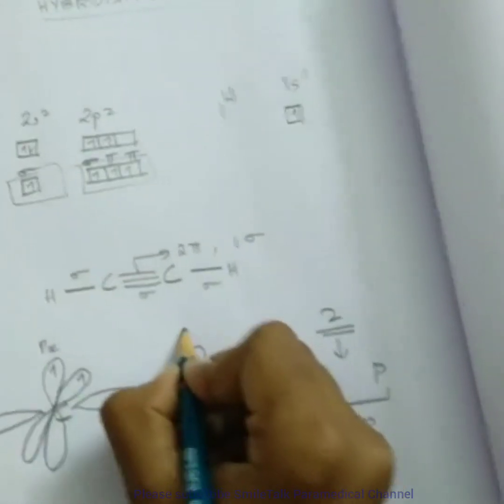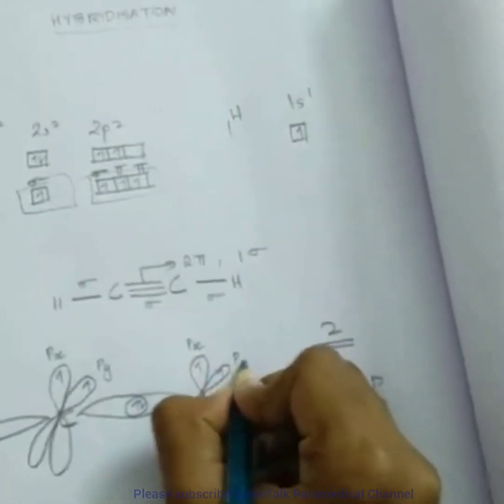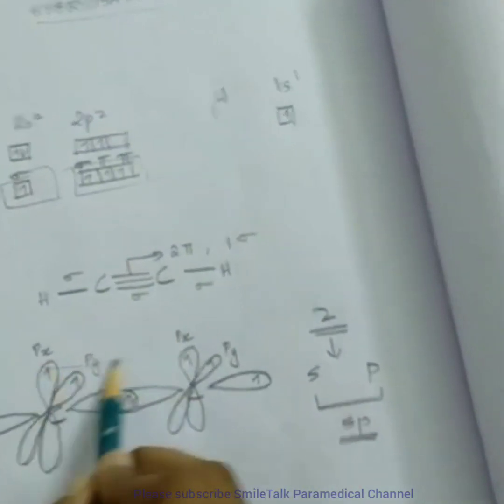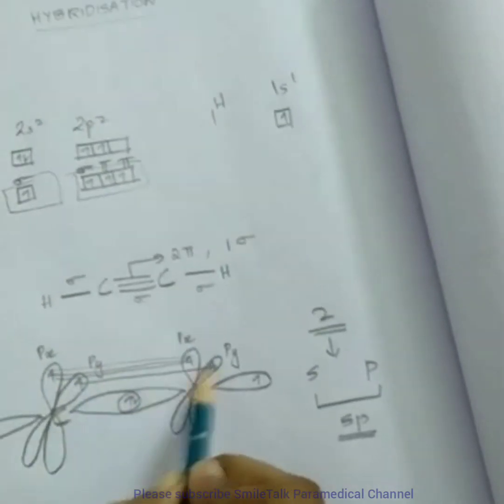Now let's consider this is px, this one px, this be py, this be py. So these undergo sidewise overlapping with each other.